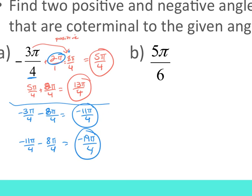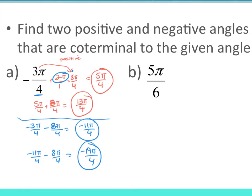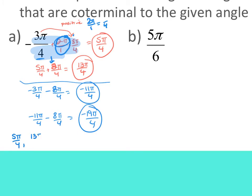To clarify: I need to change 2π/1 to have a denominator of 4, so it becomes 8π/4. Then -3π/4 + 8π/4 = 5π/4 is the first positive coterminal. The two positives are 5π/4 and 13π/4; the two negatives are -11π/4 and -19π/4. If graphed, they all land on the same terminal side — just going around the circle a different number of times.